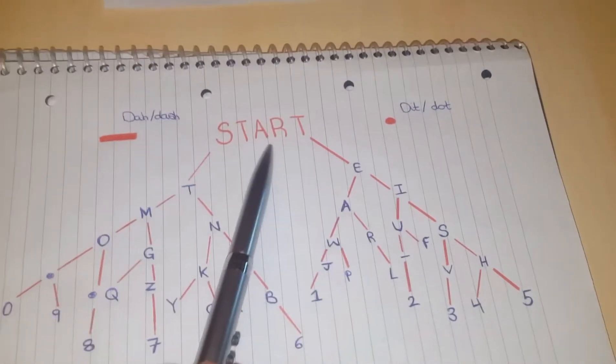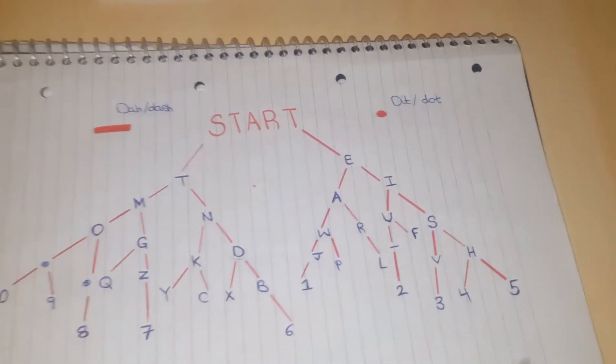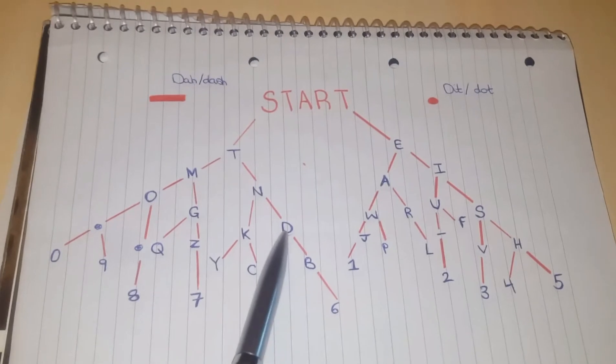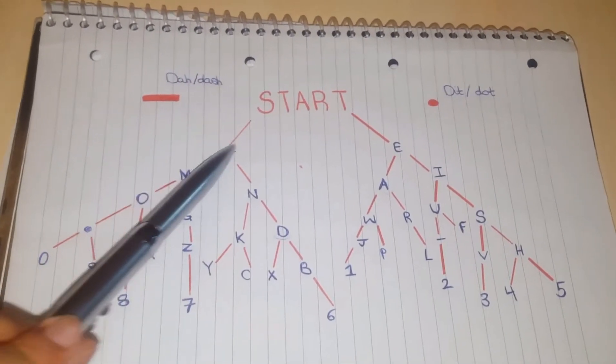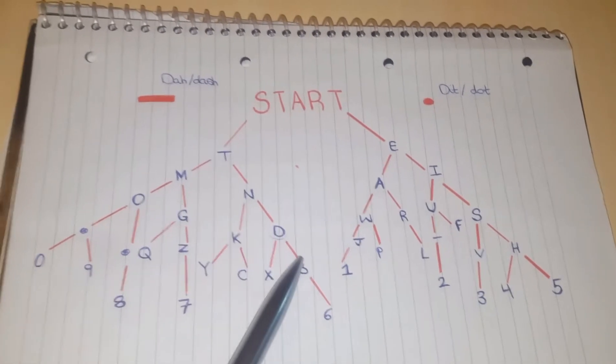To get a 5, it's just dot dot dot dot dot. To get D, it's just dash, and because you're changing direction, it's dash dot dot.